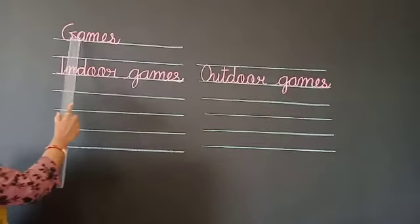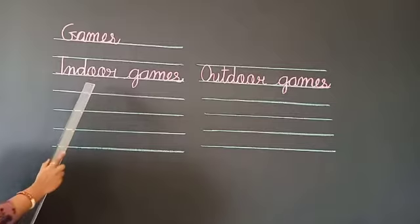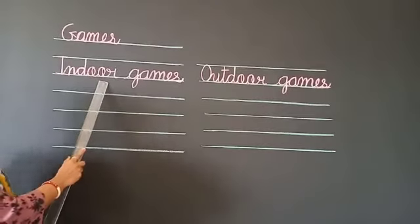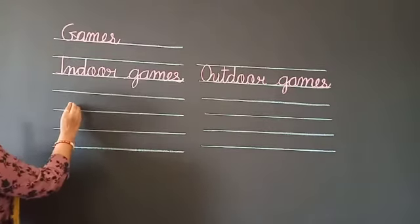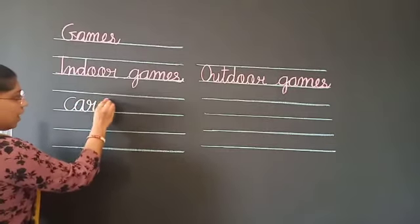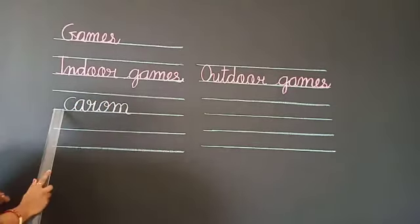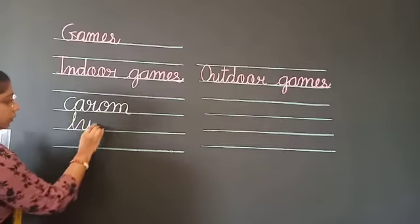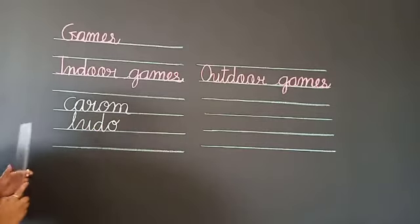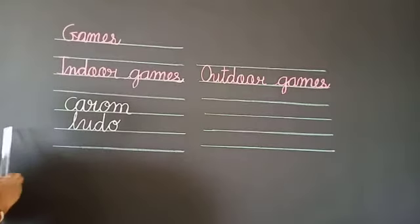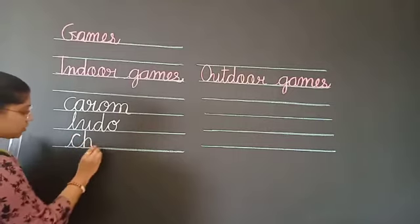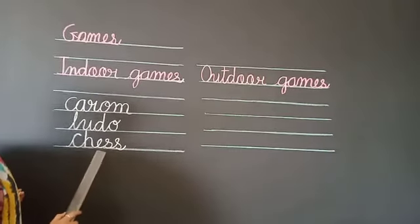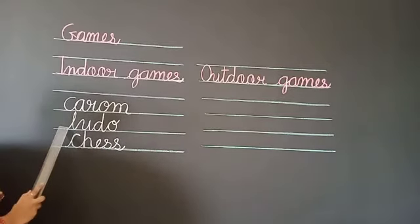Games. G-A-M-E-S. There are two types of games: indoor games and outdoor games. First, we will learn about indoor games. First one is carrom: C-A-R-O-M. Carrom. Next, ludo: L-U-D-O. Ludo. Next, chess: C-H-E-S-S. Chess. Indoor games — carrom, ludo, chess.